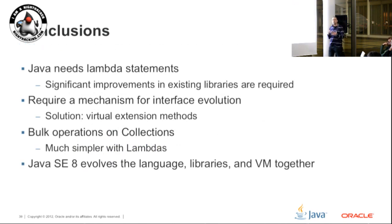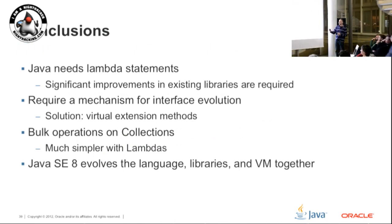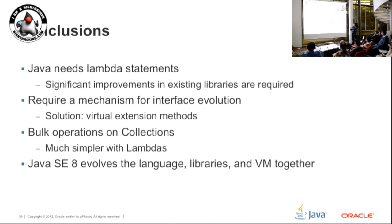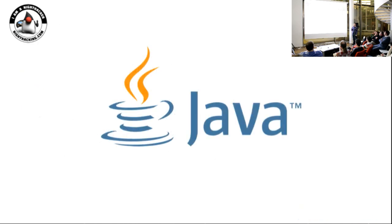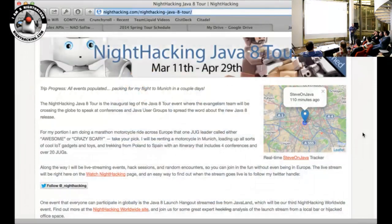To conclude: lambda expressions were something we really needed, in order to simplify how we can pass behaviour as well as values. That allows us to extend the collections APIs to have a more functional style of programming. To do that, we needed extension methods - the ability to add new methods to an existing interface. And then the whole idea of the streams API: bulk operations on collections, simplified processing, the ability to do things in parallel, the ability to optimise. Java SE8 really is a big change in terms of all this.